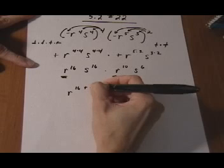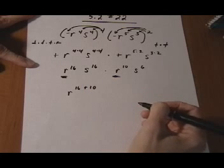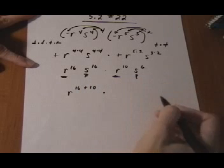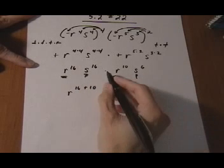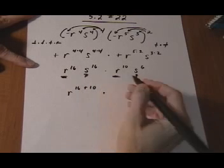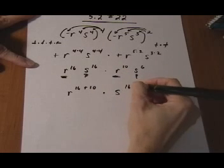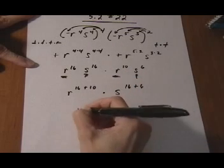So that's going to be the product rule, which gives us r to the 16 plus 10. Times again, same bases s and s being multiplied together, we use the product rule and add the exponents - s to the 16 plus 6.